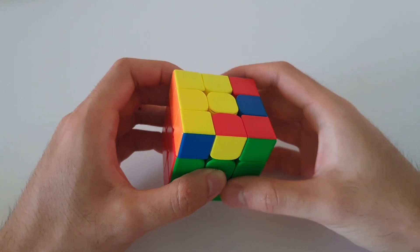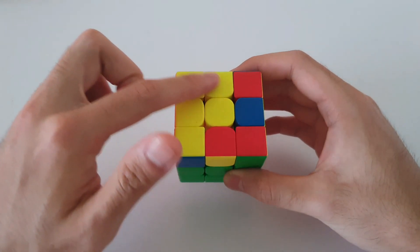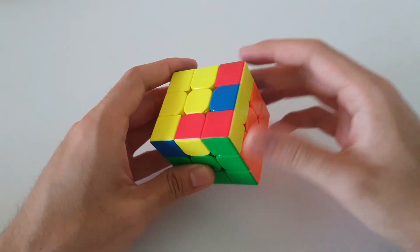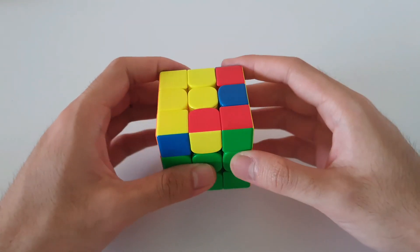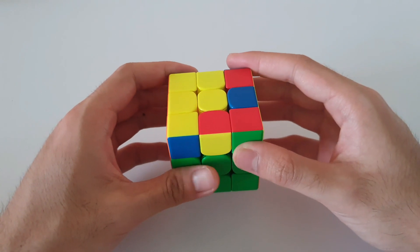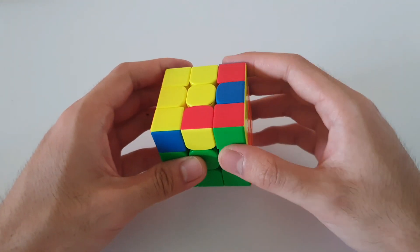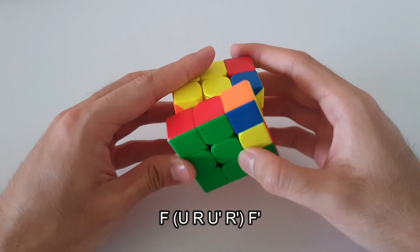So starting with our first P-shaped case here, we notice that the P is on the left side and there's a 3x1 bar on the right side. So for this case this is actually a very straightforward case. The easiest way to do this case would be this algorithm here. So it starts with an F move,